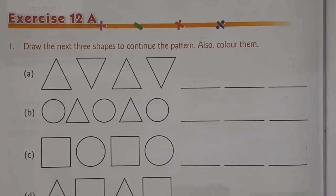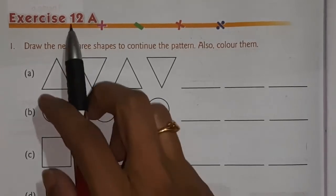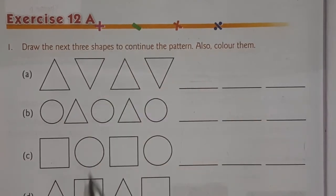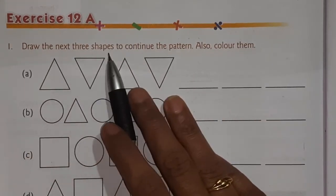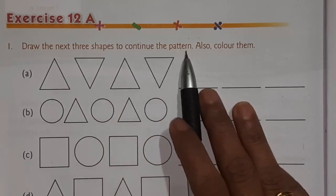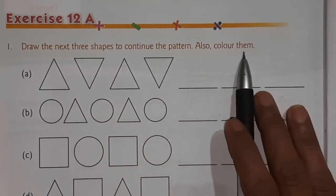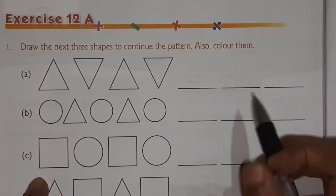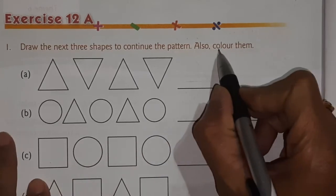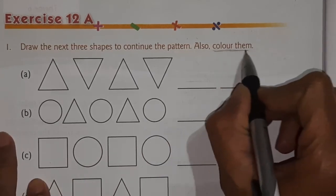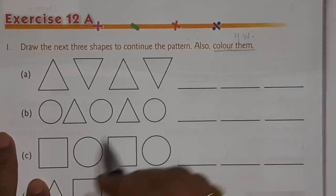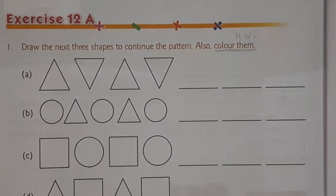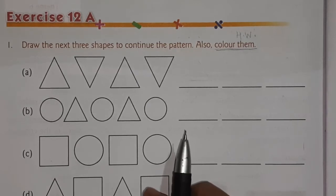On page number 144, there is Exercise 12A. Now we are going to solve this exercise. Draw the next three shapes to continue the pattern and also color them. Coloring you have to do as homework — now we are drawing the shapes.